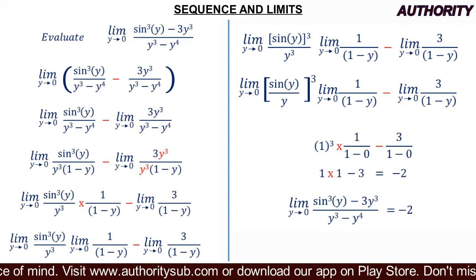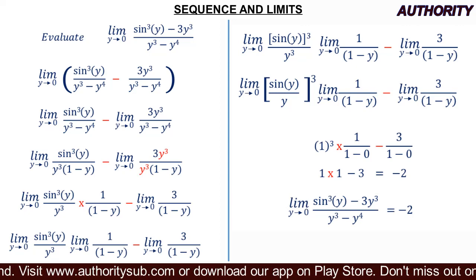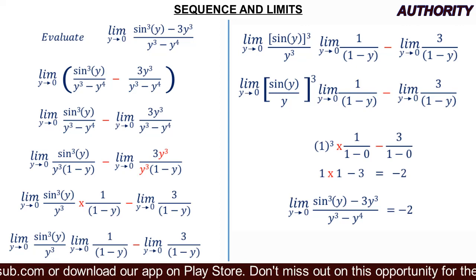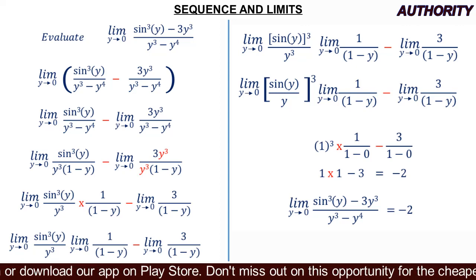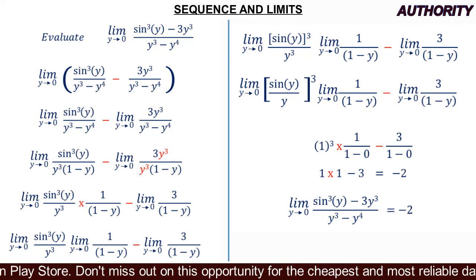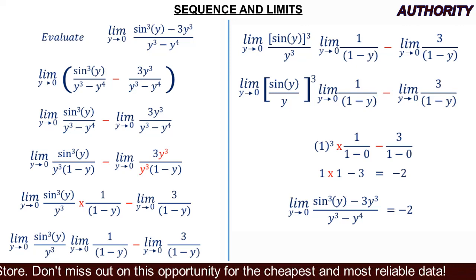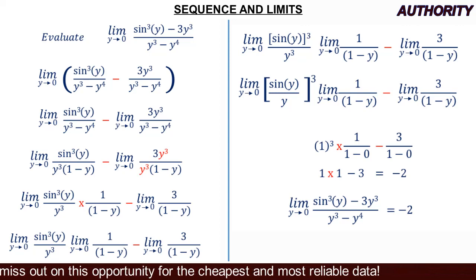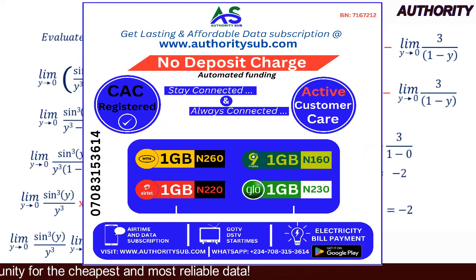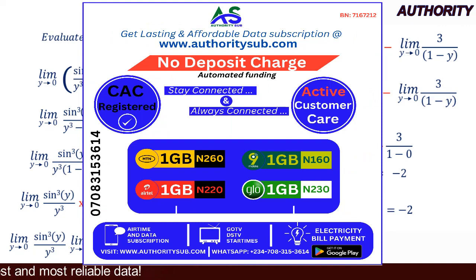One times one is one, minus three gives us negative two. Therefore, the limit as y approaches zero of sine cubed y minus three y cubed, all over y cubed minus y to the power of four, equals negative two. This is step by step how to evaluate limits such as this. Thank you very much for watching. Please subscribe, like and share.